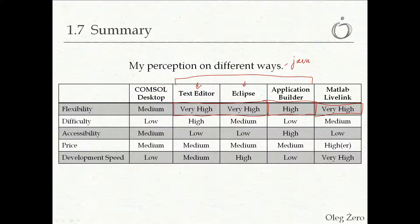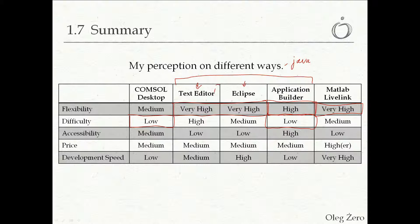Some people might just be starting their adventures with multi-physics simulations. The console desktop is really easy to work with — it contains everything it needs and doesn't take much training to get started. Similarly, the Application Builder, being part of the console desktop, also presents something easy to get started. On the other hand, working with a text editor is something of very high difficulty, because you need a very high understanding of what is going on and will likely be working closely with the documentation — I'd recommend it for advanced users. Working through Eclipse and MATLAB Live Link is medium difficulty, because you have hints like auto-completion and MPH Navigator, which make the job a bit easier.